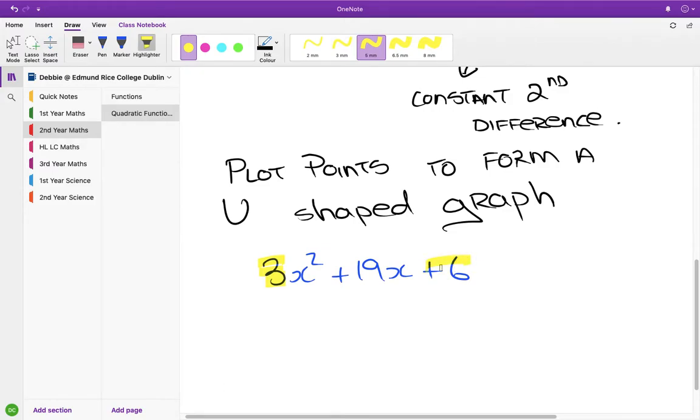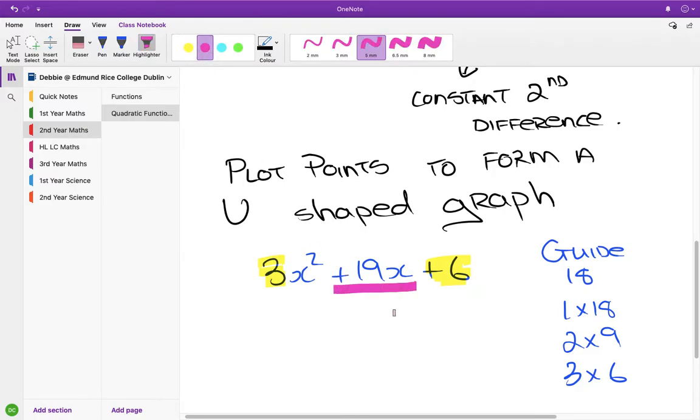So to get the guide number, we multiply the first by the last. So the guide, in this case, is 18. Factors of 18 are 1 by 18, 2 by 9, and 3 by 6.